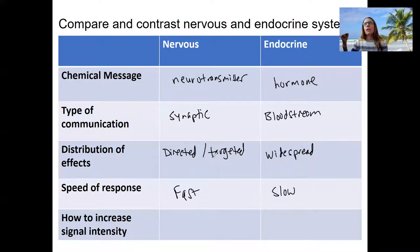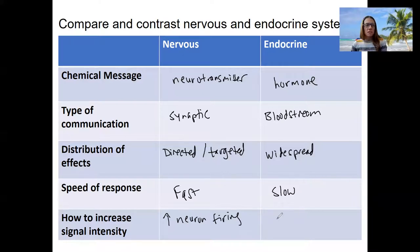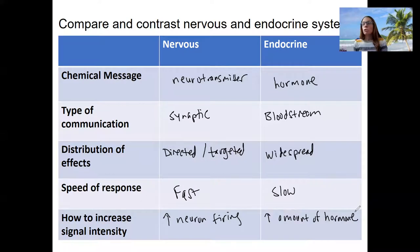How to increase signal intensity: if you want a larger muscle contraction or a larger amount of insulin produced in response to blood sugar, those are two different things. For the nervous system, we increase neuron firing — the action potentials that are fired. For the endocrine system, we increase the amount of hormone. Those are two different mechanisms used to increase signal intensity.